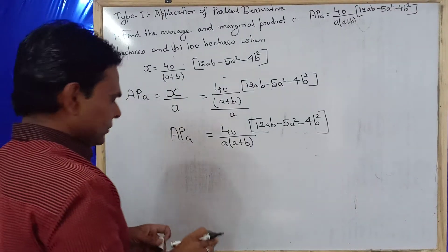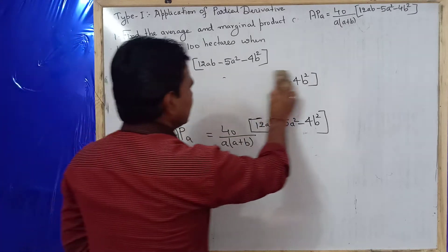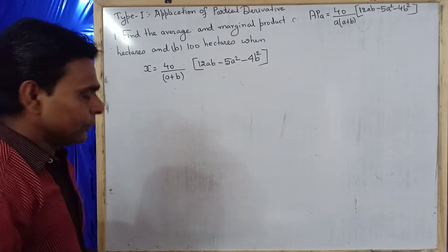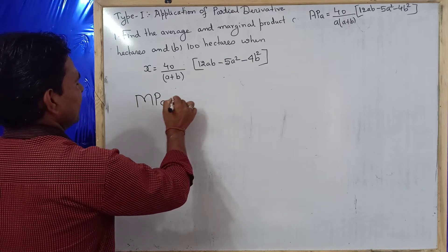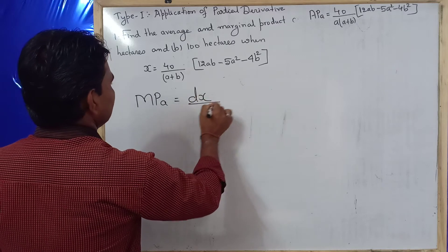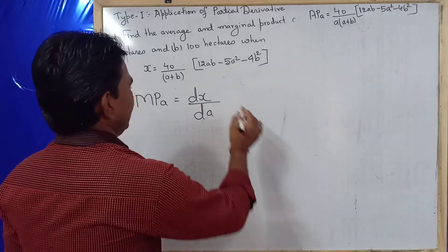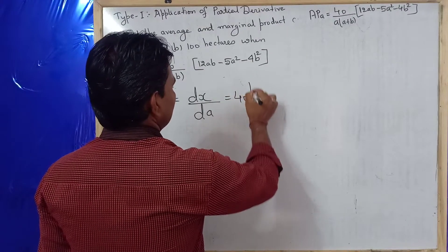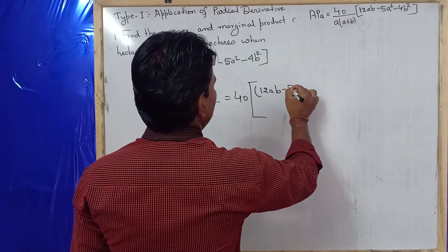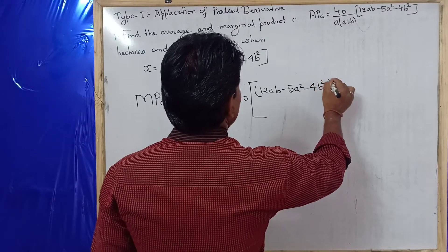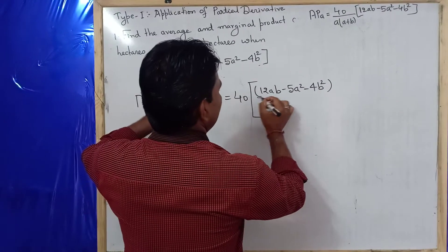The second step is to find the marginal product. Marginal product of A — MPA — to find the marginal product we know we need to take the partial derivative. So MPA equals dX/dA, that is the partial derivative of the function with respect to A. Take 40 as constant outside; the numerator is 12AB minus 5A squared minus 4B squared, and the denominator is A plus B.